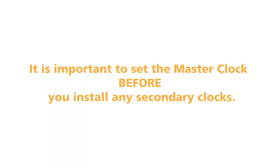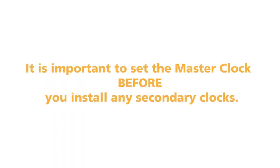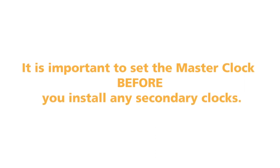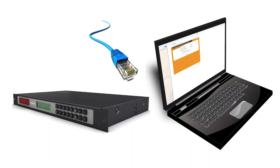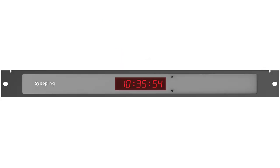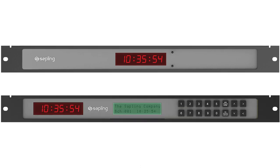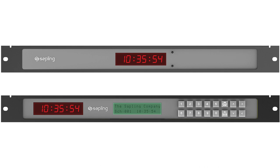It is important to set the MasterClock before you install any secondary clocks. There are three different methods you can use to configure your MasterClock. The first option is to program the MasterClock using its front buttons. Depending on the model, Sapling MasterClocks come with either two push buttons or a keypad for on-site programming.